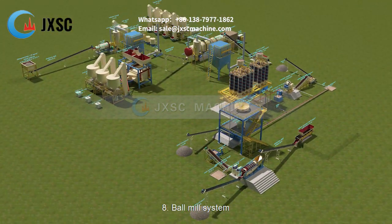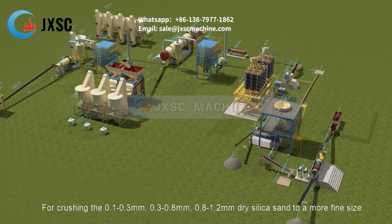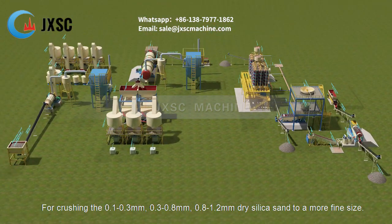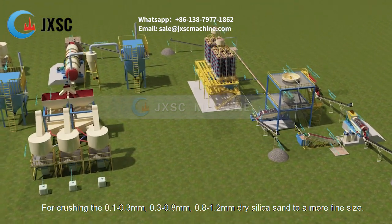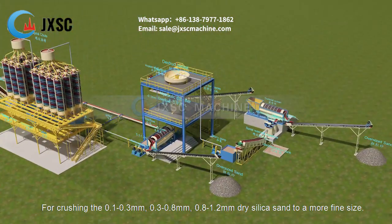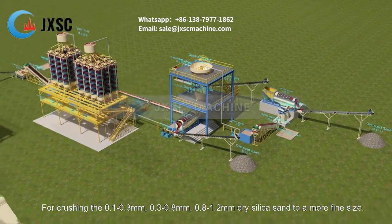8. Ball mill system. For crushing the 0.1 to 0.3 millimeters, 0.3 to 0.8 millimeters, and 0.8 to 1.2 millimeters dry silica sand to a more fine size.